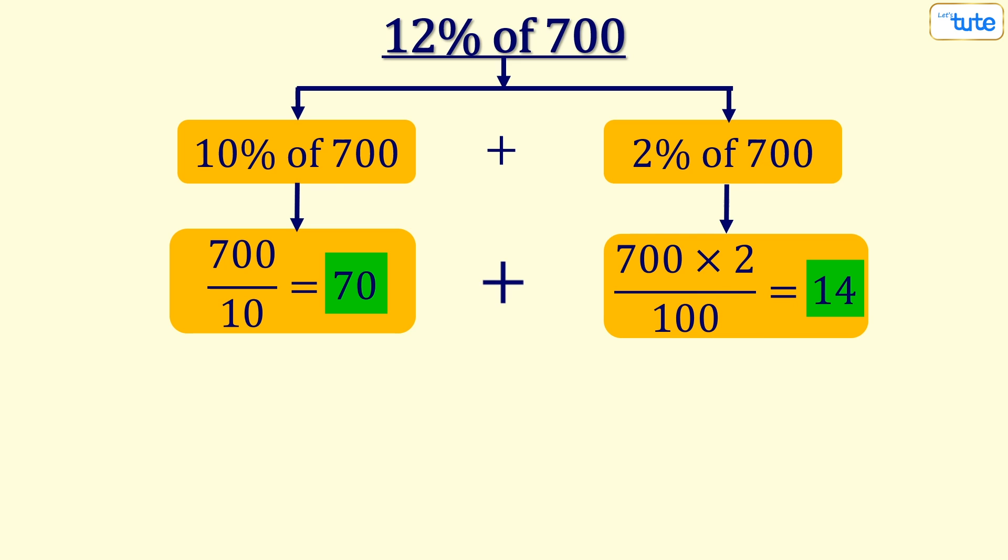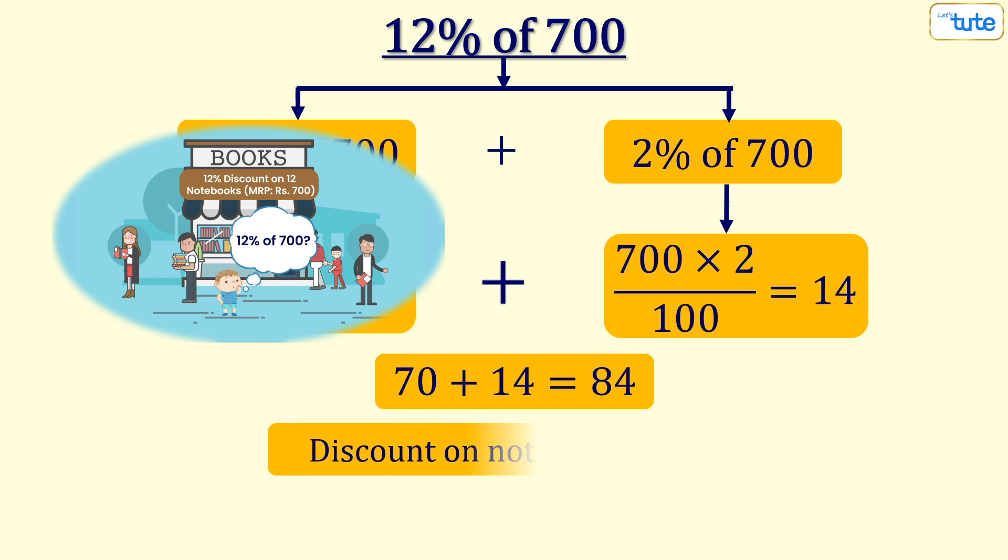Finally, we will add these two values together and we get 84. And thus, the value of 12 percent of 700 is calculated successfully. So, the discount on notebooks will be 84 rupees.